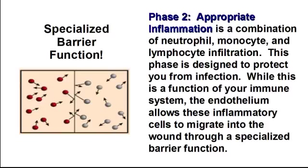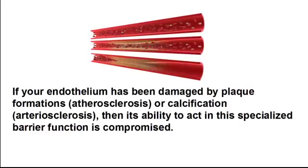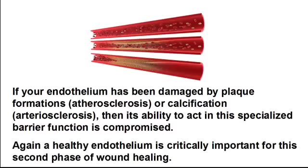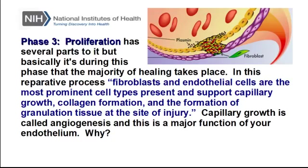Phase two, appropriate inflammation, is a combination of neutrophil, monocyte, and lymphocyte infiltration. This phase is designed to protect you from infection. While this is a function of your immune system, the endothelium allows these immune system cells to migrate into the wound through a specialized barrier function. If your endothelium has been damaged by plaque formations, atherosclerosis, or calcification — arterial sclerosis — then its ability to act in the specialized barrier function is compromised. A healthy endothelium is critically important for this second phase of wound healing.